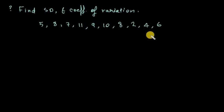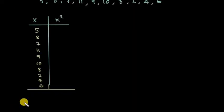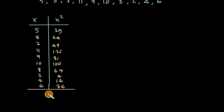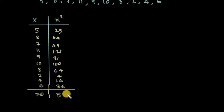We set up a table with columns x and x². The x² values are 25, 64, 49, 121, 81, 100, 64, 4, 16, and 36. We find sigma x² equals 560 and sigma x equals 70.